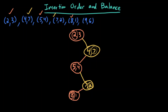And now the last one, (9,6). 9 is greater than 2, go right. 6 is less than 7, go left. 9 is greater than 5, go right. 6 is less than 2, go left. 9 is greater than 8, go right, and insert. Uh oh — this is a perfectly unbalanced tree. I've inserted these elements but gotten a perfectly unbalanced tree, which is terrible for performance.